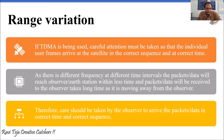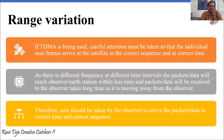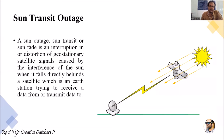Therefore, special care should be taken by the observer or earth station to ensure that packets or data arrive in the correct time as well as the correct sequence. This is the effect with respect to range variation, or distance variation. Now coming to the third one.